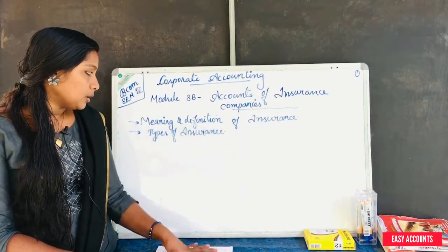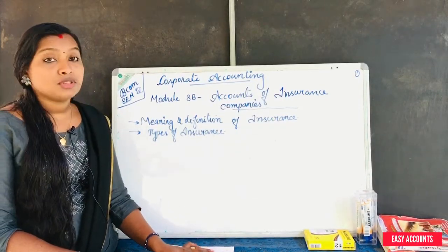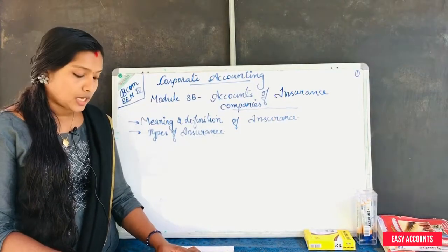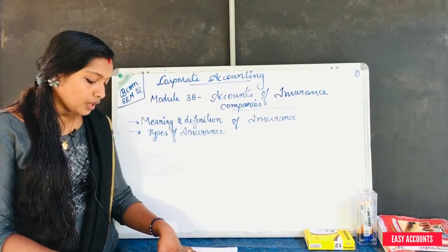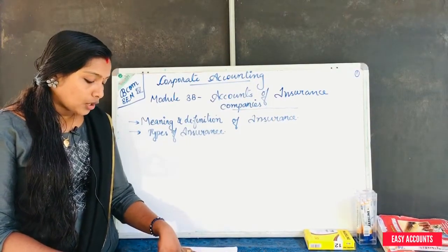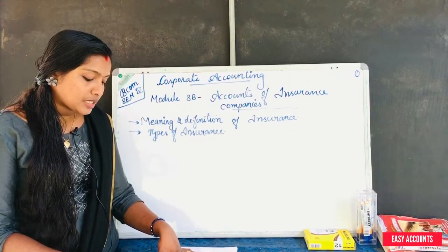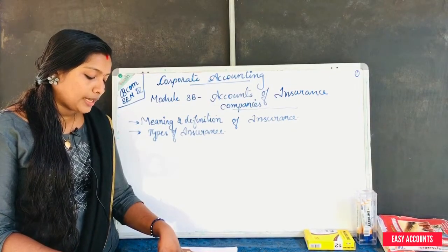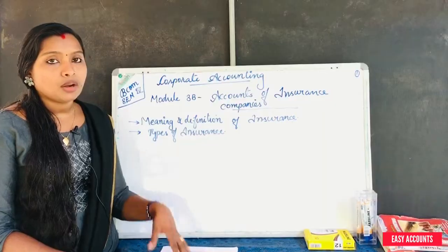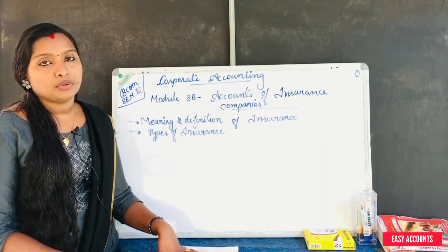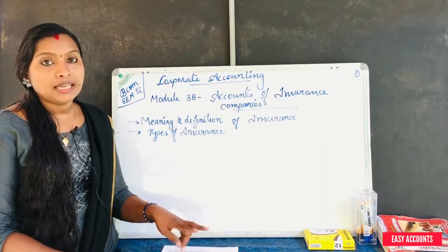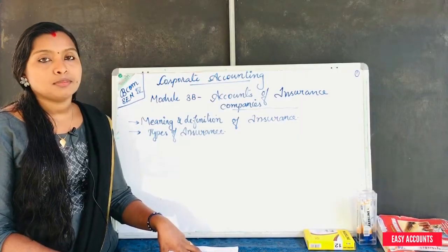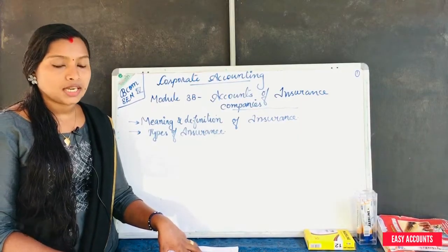The next topic is the types of insurance. From the accounting point of view, insurance business shall be grouped broadly into two categories. According to the accounting point of view, insurance has two types: one is life insurance and general insurance.